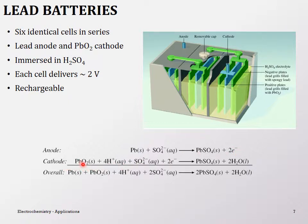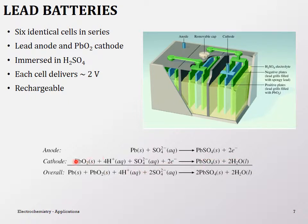The anode gives lead to form lead sulfate and releases two electrons, while the cathode has lead oxide accepting electrons. Since the forward reaction is spontaneous and the reverse is non-spontaneous, you need an external power source — like another car — to jump-start and recharge. Once the reaction is restarted, it continues on its own, like providing activation energy. That reversibility is the big advantage of lead batteries.